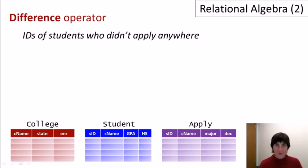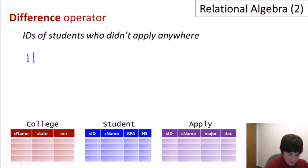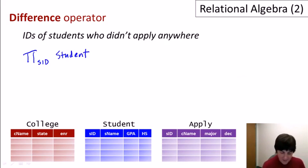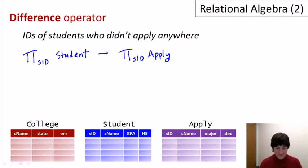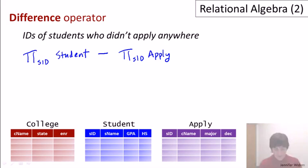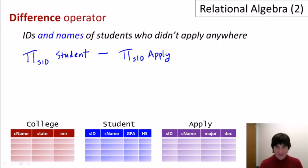Our next set operator is the difference operator, and this one can be extremely useful. For example, let's find the IDs of students who didn't apply to any colleges. We'll start by projecting the student ID from the student relation to get all student IDs. Then we project the student ID from the apply relation, giving us the IDs of all students who have applied somewhere. We take the difference operator (written with the minus sign) and that gives us the result — all student IDs minus those who have applied somewhere. Suppose instead we wanted the names of those students, not just their IDs — that's a little more complicated.